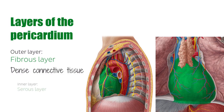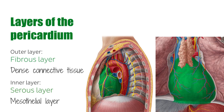The inner layer of the pericardium is known as the serous layer, or the parietal layer, and is in direct contact with the pericardial fluid. It consists of a mesothelial layer — simple squamous epithelium — which reflects onto the roots of the great vessels and runs directly over the external surfaces of the heart as the epicardium, or visceral pericardium.